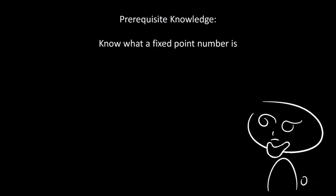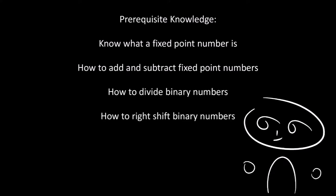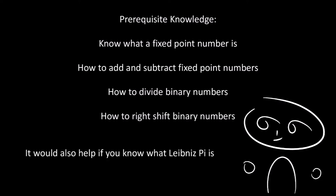Prerequisite knowledge required for this video is that you know what a fixed point number is, how to add and subtract fixed point numbers, how to divide binary numbers, and how to right shift binary numbers. It would also help if you knew what Leibniz Pi is, which I discussed in my previous video.